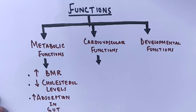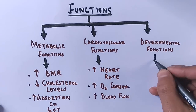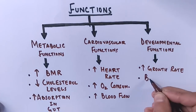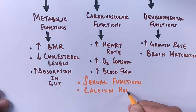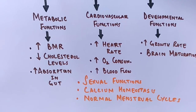The cardiovascular functions include increasing heart rate, which in turn increases oxygen consumption and results in increased blood flow. The developmental functions include increasing the growth rate of a person, and the thyroid gland has also been demonstrated to help in brain maturation. Other minor functions include sexual functions, calcium homeostasis via calcitonin, and maintaining a normal menstrual cycle.